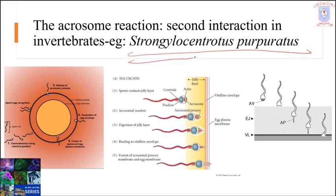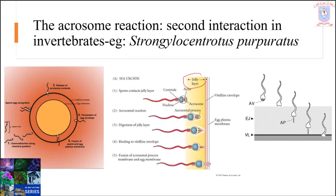Here we are discussing the acrosomal reaction in the species Strongylocentrotus purpuratus, a sea urchin. The acrosomal reaction is a crucial step in fertilization that occurs when sperm contacts the jelly coat. Here you can see the jelly coat or jelly layer surrounding the egg. The acrosome reaction inducing component in the egg jelly of S. purpuratus is a fucose sulfate polymer, or FSP.